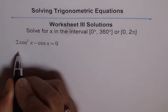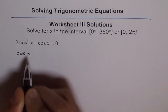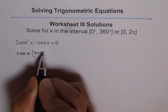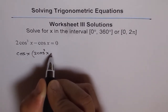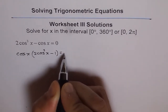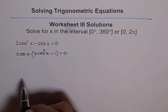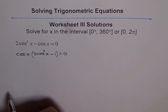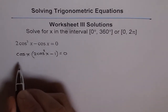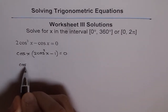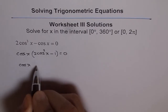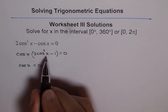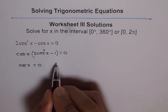We can factor cos x, so we get cos x times the bracket (2 cos squared x minus 1) equals 0. Either of the factors could be 0 to give us the solution. So one answer is for cos x equals 0, and the other is for 2 cos squared x minus 1 equals 0.